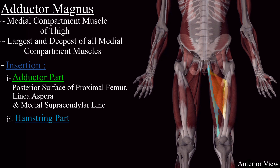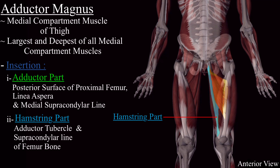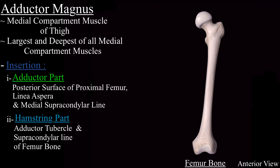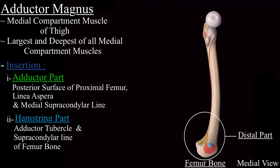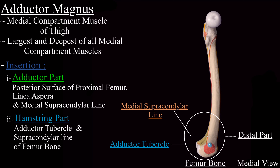Next is the hamstring part. It is inserted on the adductor tubercle and the supracondylar line of the femur bone. On the isolated femur bone, in the distal part on the medial side, this is the adductor tubercle, and this is the medial supracondylar line where the hamstring part of the adductor magnus muscle is inserted.